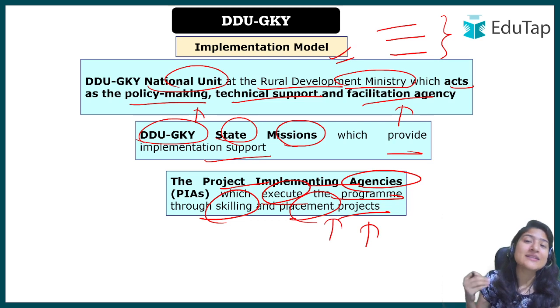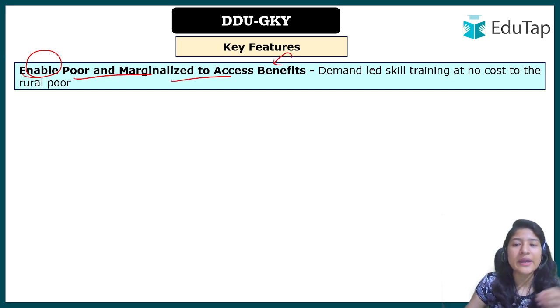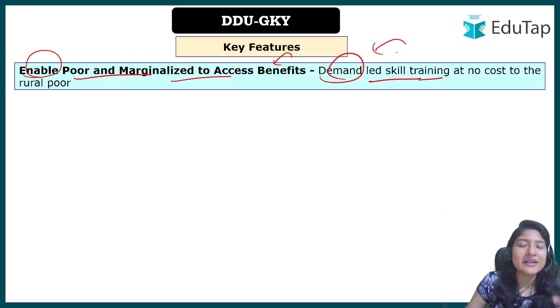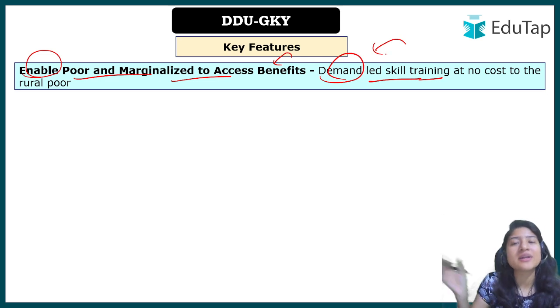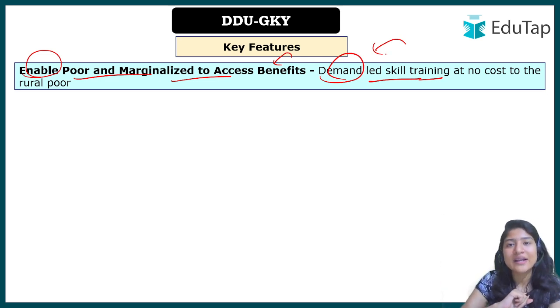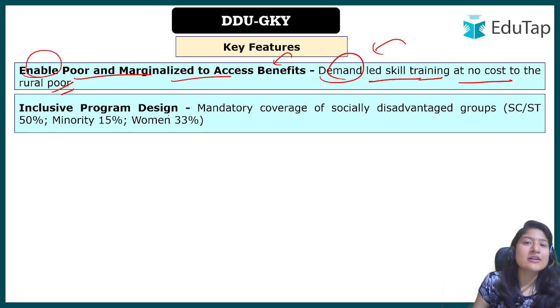Key features include: the scheme is demand-led skill training — skills are matched to national and international market demand, not just one skill for everyone. Training is provided at no cost to the rural poor youth. Not only skill training but placement is also provided under this scheme.